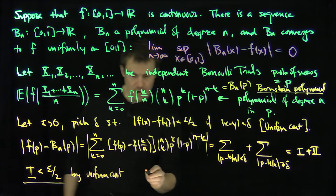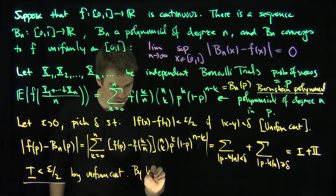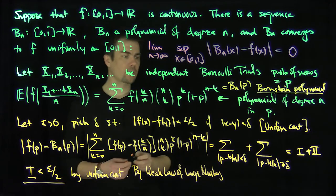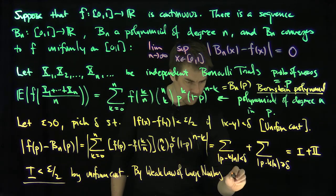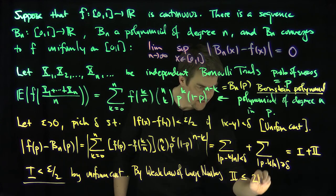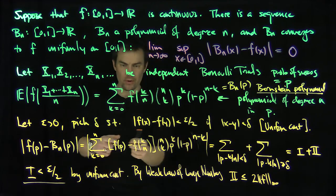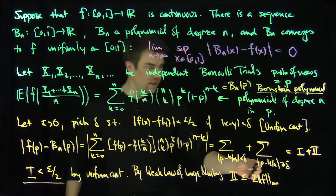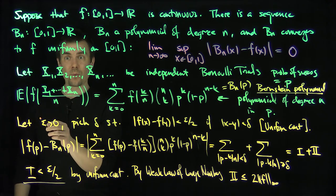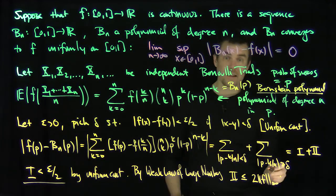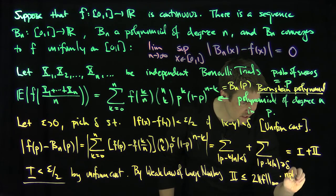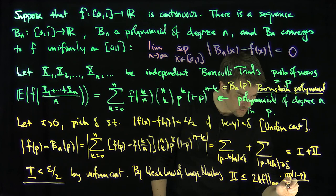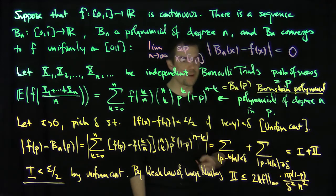How can I estimate this second sum? By the weak law of large numbers, the second sum is less than or equal to twice the L infinity norm, the maximum of the function f. Then what's left over is simply the probability that these random variables exceed delta. By the weak law of large numbers, that's less than the variance over n times p(1-p) over delta squared times n squared.